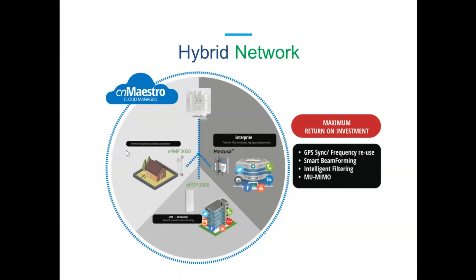Something cool to note: via the Cambium wireless fabric, we can cover multiple sections of your network. Specifically on the outdoor wireless front, we've got a hybrid network that Cambium have where different types of solutions can all work together and be managed from CN Maestro. Whether it's a smaller residential application — you might want to use something like the ePMP 2000 — or for a slightly more demanding scenario with small-to-medium businesses or high-end residential clients wanting higher data packages, you might go with the ePMP 3000. But for a fully-fledged enterprise solution, you may want to look at the CN Medusa, which is the top-of-line solution.